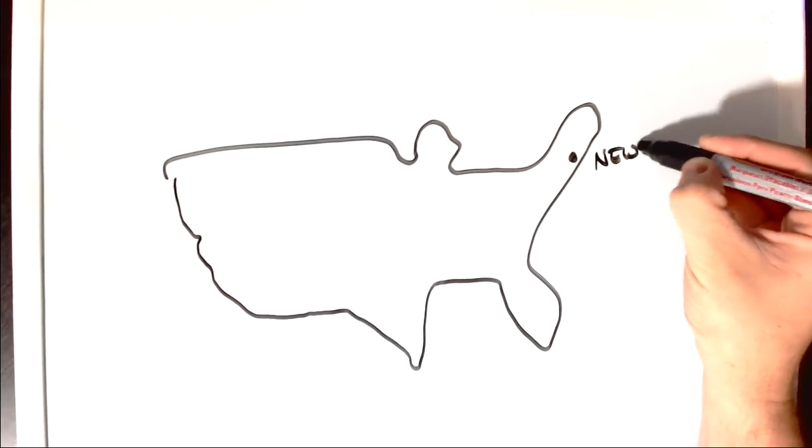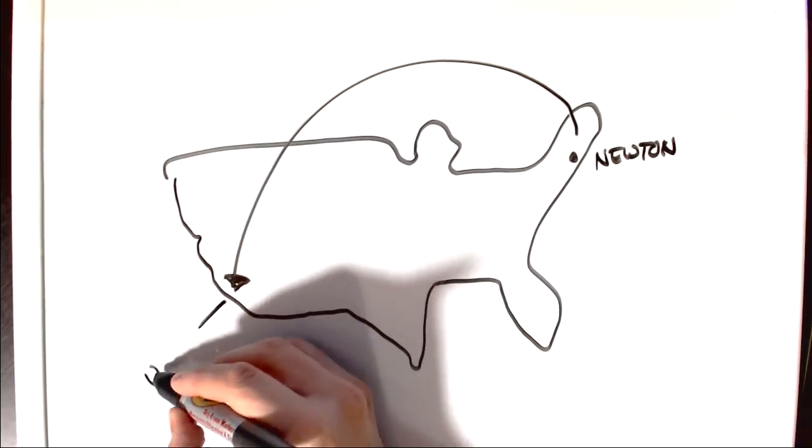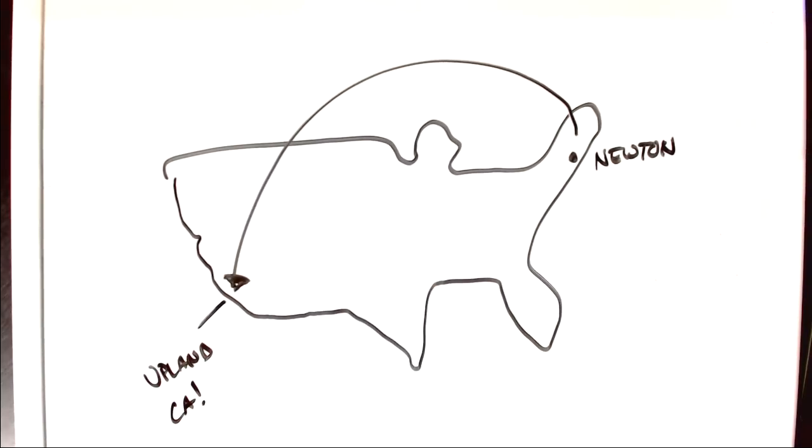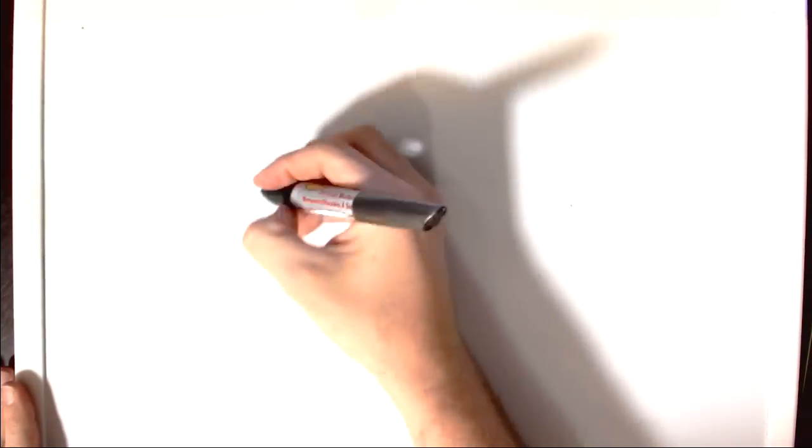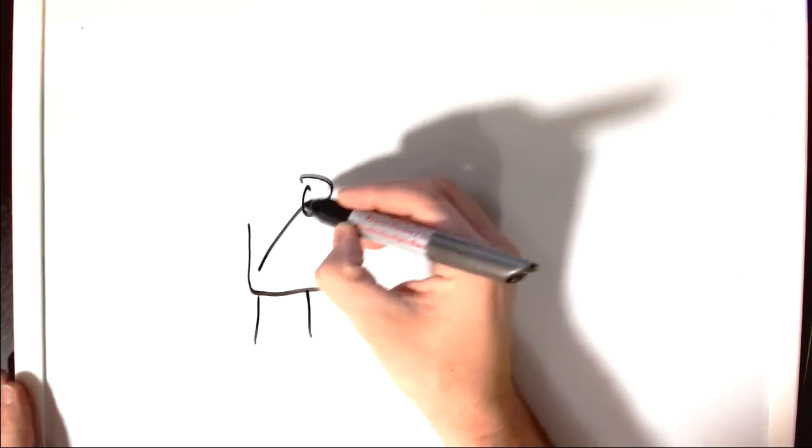We had moved from Newton all the way to Upland, California when I was only one. And then from Upland when I was four, we moved to a little city called Rialto. It's about 60 miles east of Los Angeles. Not a whole lot to see here. Most of you have probably never heard of it. Can't say I blame you.